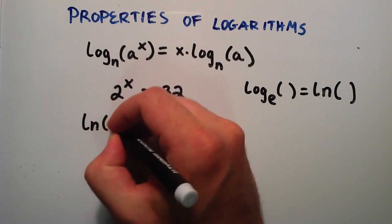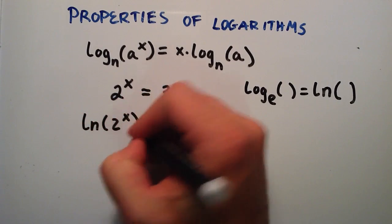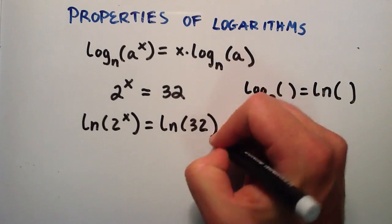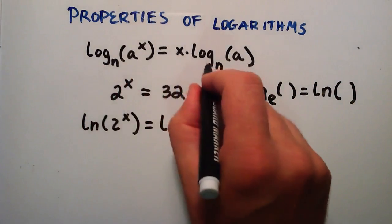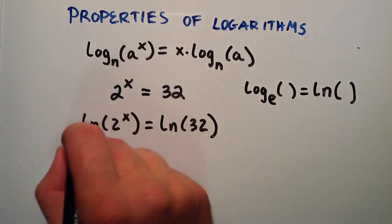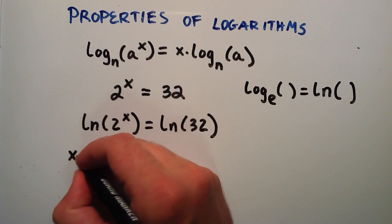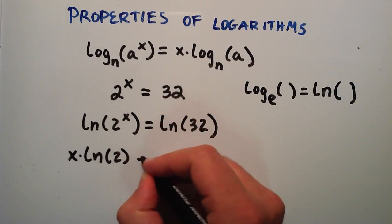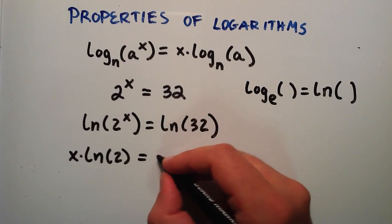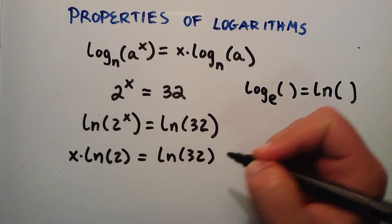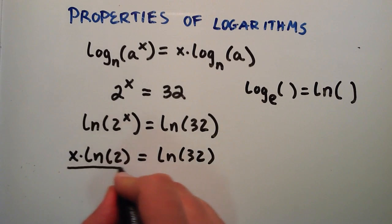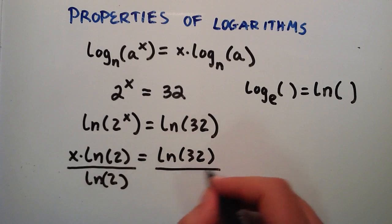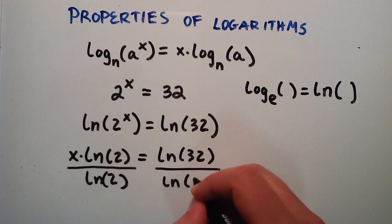So we have the natural log of 2 to the x, and that's equal to the natural log of 32. Then I'm going to use this property to pull this x out front. So this is equal to x times the natural log of 2, and the right-hand side stays the same. Then we divide each side by the natural log of 2, so this becomes the natural log of 32 divided by the natural log of 2.